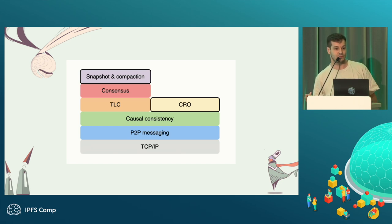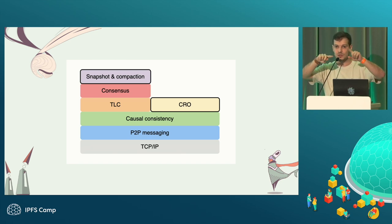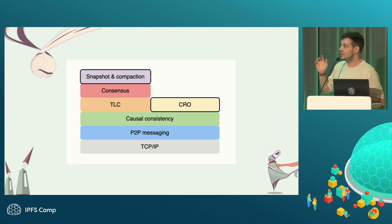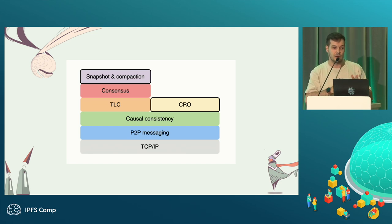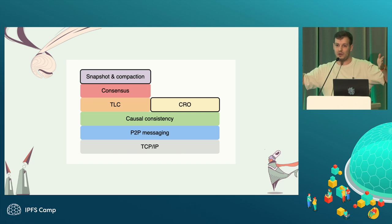We need to have peer-to-peer messaging — we're currently using LibP2P for that. We also need causal consistency because of the operations. We need to have dependencies on operations for upgrading the state and some conflict resolution mechanism. With that, we also introduce the TLC. The TLC is super important because we want to compact the state from time to time, have some kind of snapshotting within the network, and for that we need some form of consensus — which is super tricky in distributed systems because timestamps can't reliably be used.